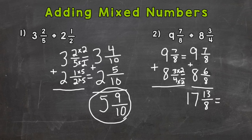To convert the improper fraction to a mixed number, we do the top divided by the bottom: thirteen divided by eight. How many whole groups of eight can we pull out of thirteen? One whole group, with a remainder of five — five left over — and we keep our denominator of eight.